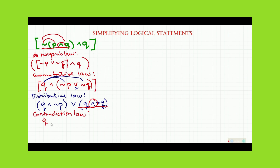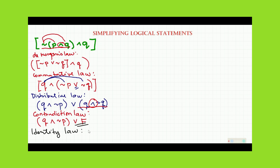Using the contradiction law, we get a new statement: Q and negation of P, or the false statement. Simplifying further using the identity law, we get rid of the false, giving us the simplified statement: Q and negation of P. This is the simplified form of negation of (P and Q) and Q.